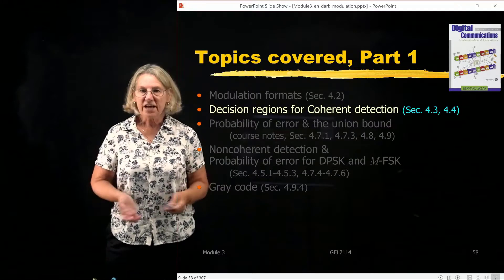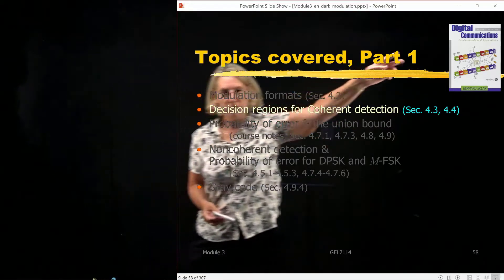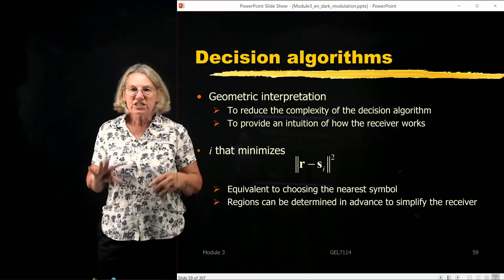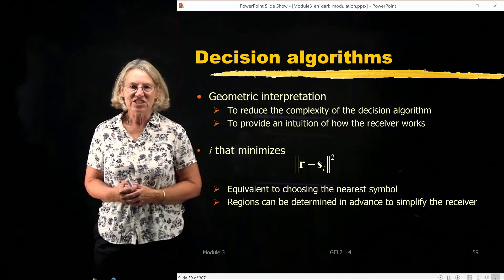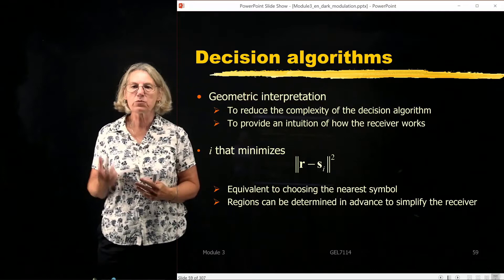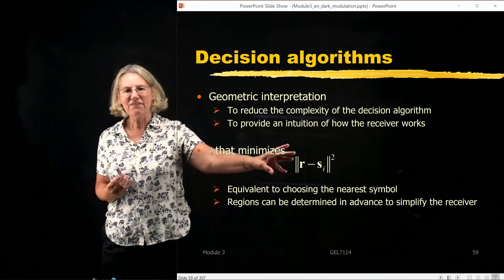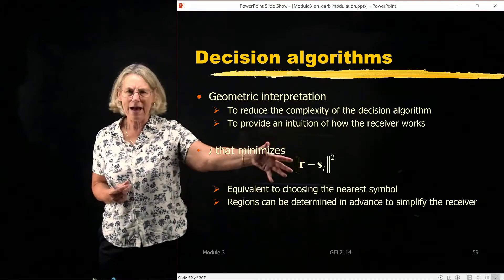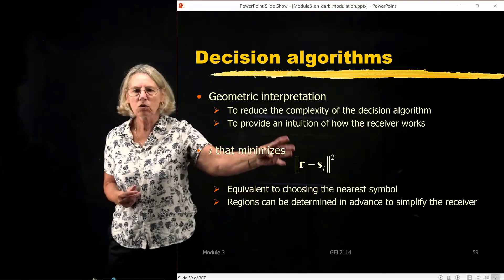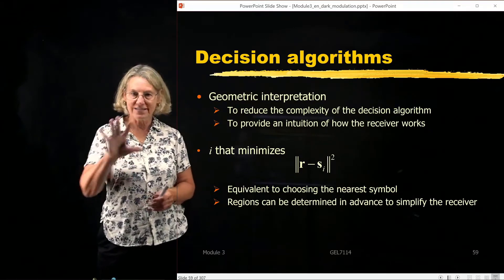This discussion of decision regions for coherent detection is found in sections 4.3 and 4.4 of our textbook. The geometric interpretation is that we want to minimize the distance between the received vector and each one of the symbols. That's our strategy — if it's maximum likelihood, that's it alone; if it's MAP, we might have a weight vector as well. But essentially, we're looking for a region.